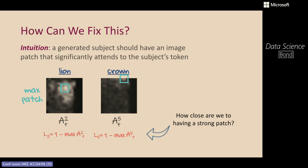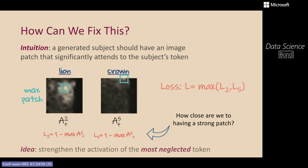We have a loss per subject and need an overall loss. The overall loss is the loss of the most neglected subject — the maximum loss across all tokens we want to enforce. In this case, L is the maximum of L₂ and L₅, since 'lion' is the second token and 'crown' is the fifth. The actual Generative Semantic Nursing is a gradient descent step: we shift ZT by the gradient of this loss. Simple and intuitive — we define the criteria directly from the model's own information.